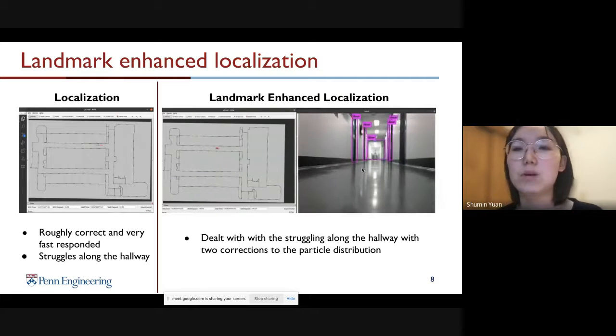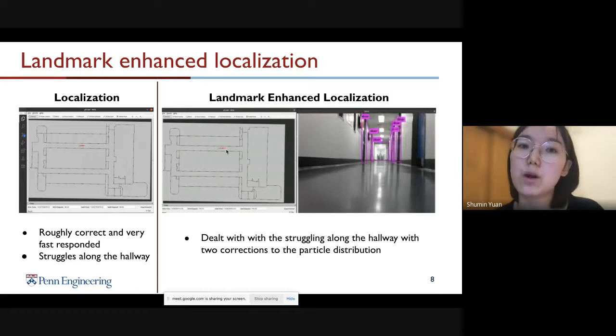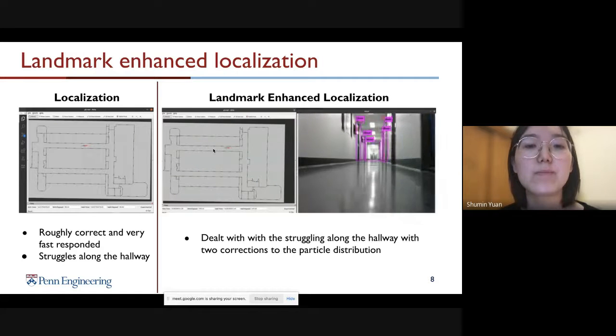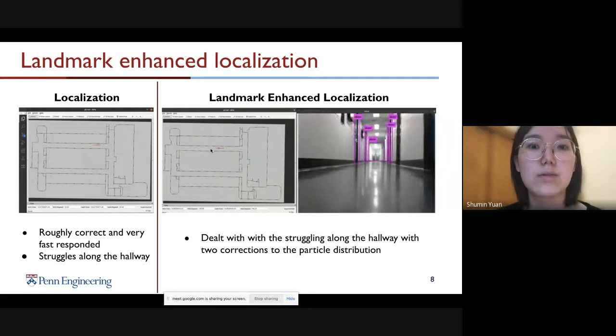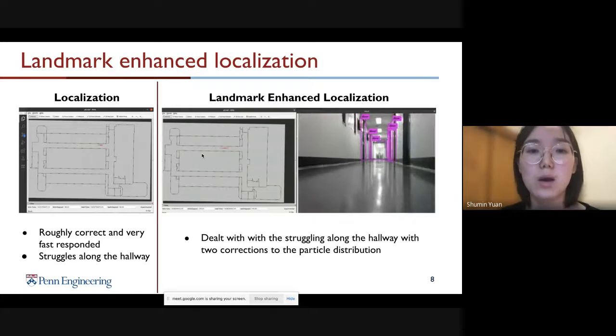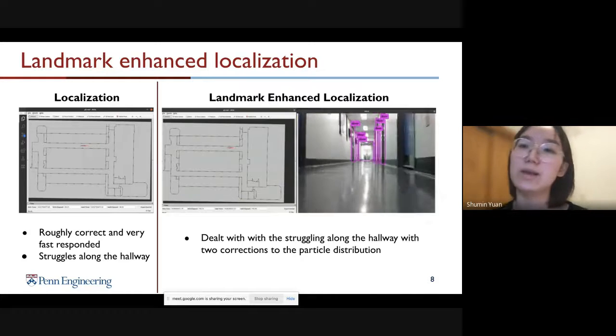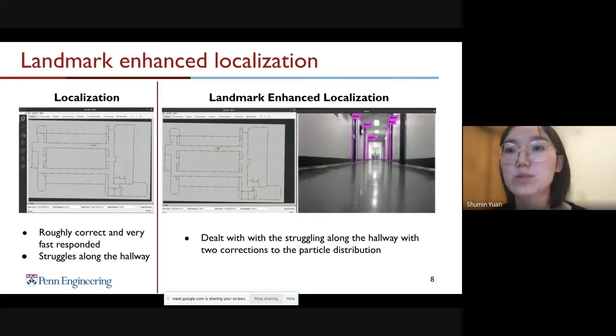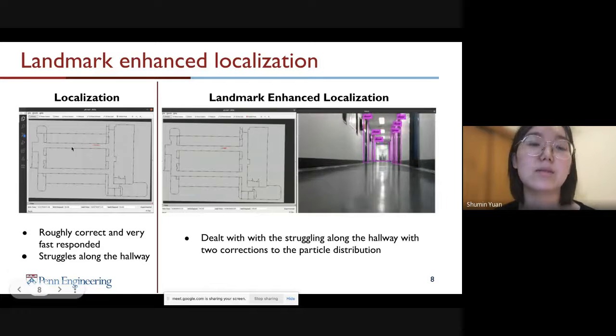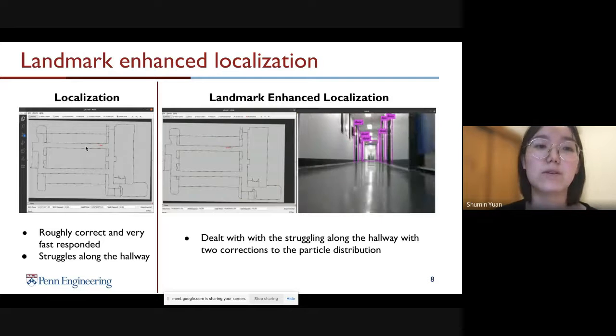However, with landmark detection, we can do the particle distribution correction. The first correction happened here, and there is actually a second correction happened around here. We can see that with landmark detection enhanced localization, the localization performance can be improved, especially at places like the hallway where the features are very not obvious.